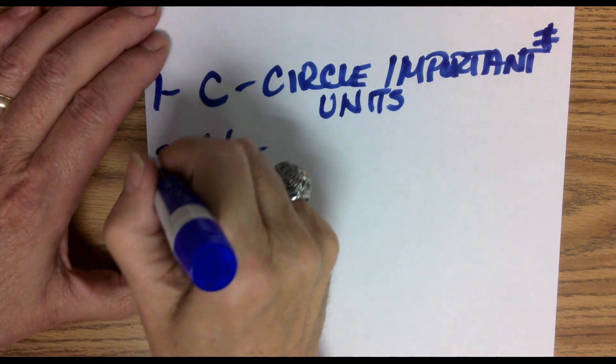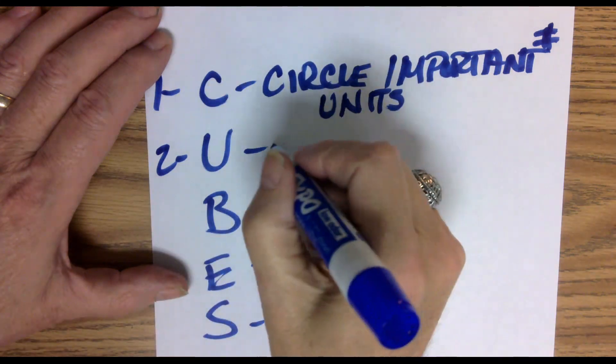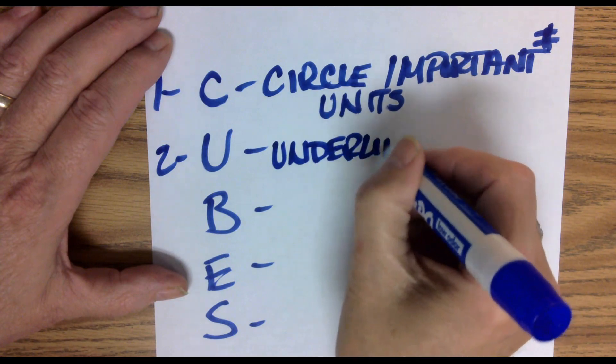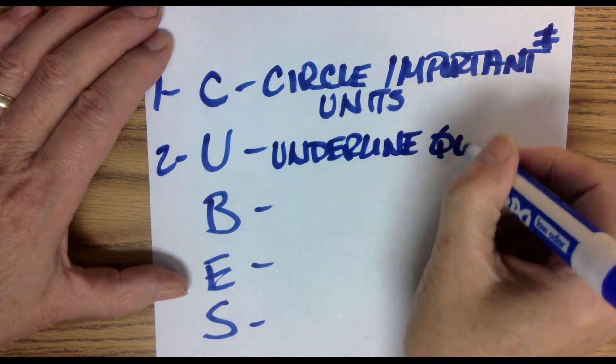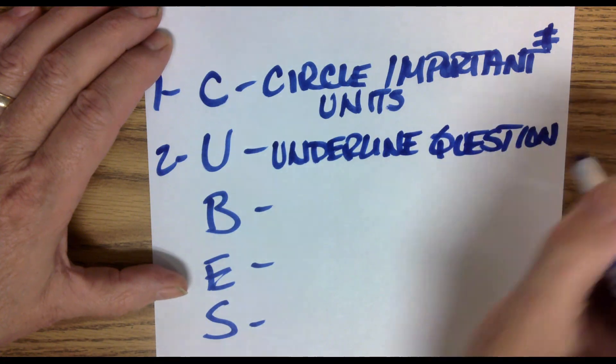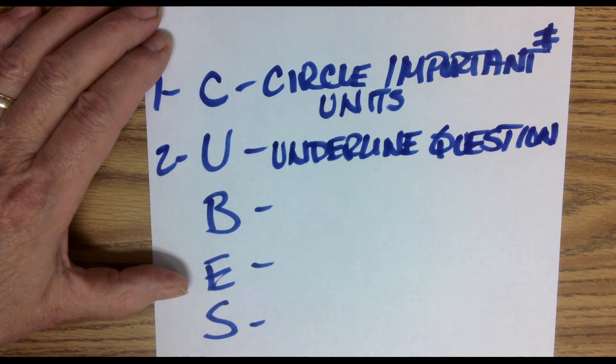Number two, you are going to underline the question. And I'll provide a highlighter for you if you want, but you need to highlight the question. So underline the question. You want to keep that at the top of your mind. What are they looking for? What am I trying to find? So you don't get off on a tangent or get distracted and don't give the right answer.